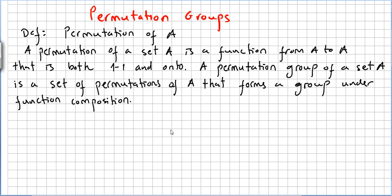This is the first video on permutation groups. A permutation of a set A is a function from A to A that is both one-to-one and onto — so it is injective and surjective. A permutation group of a set A is a set of permutations of A that forms a group under function composition.